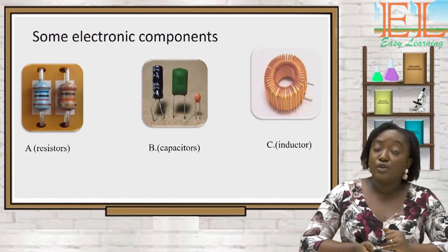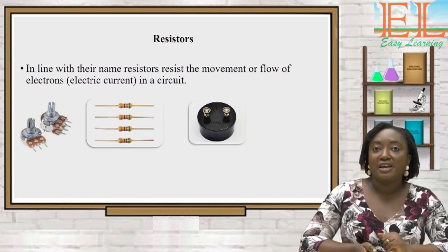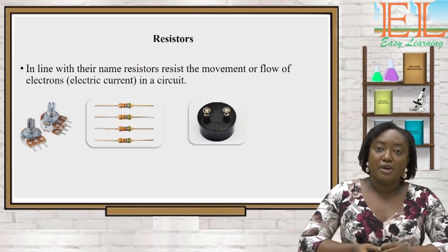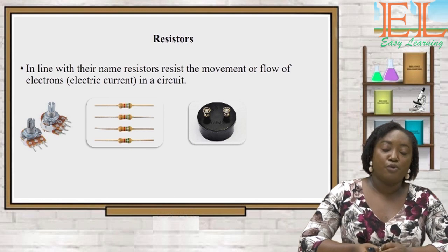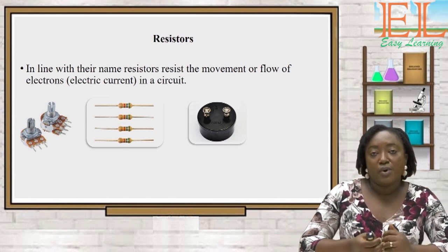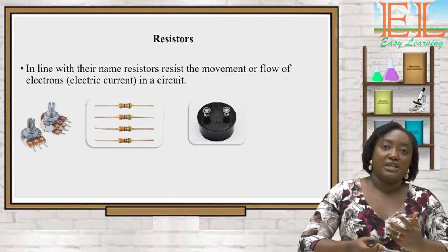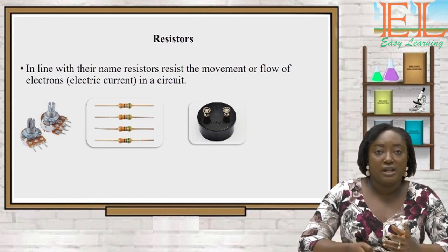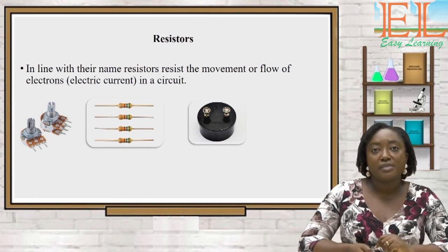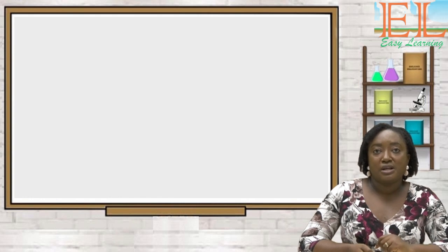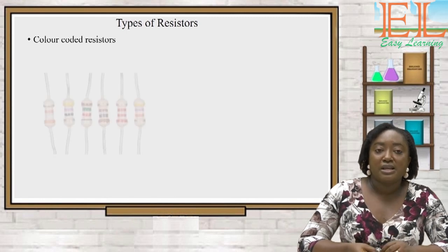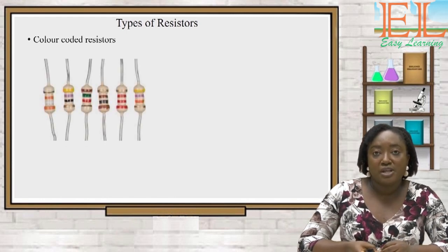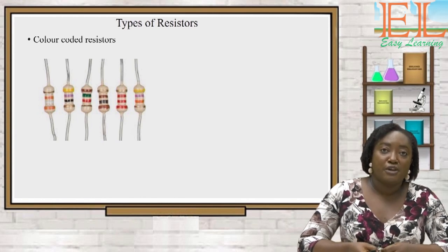Let's see how resistors look and how they behave in an electronic circuit. In line with their name, resistors resist the movement or flow of electrons in a circuit. When electrons flow, there is electric current, so resistors resist the flow of electric current. There are several types of resistors. We have what we call color-coded resistors — resistors that have different color bands which together indicate the value of the resistance.